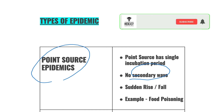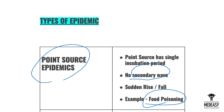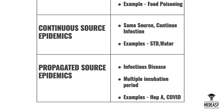After the cure of the disease, there is a sudden fall in cases. An example is food poisoning at a specific marriage event, where a large number of people are infected by food poisoning and show symptoms — this is an example of a point source epidemic.